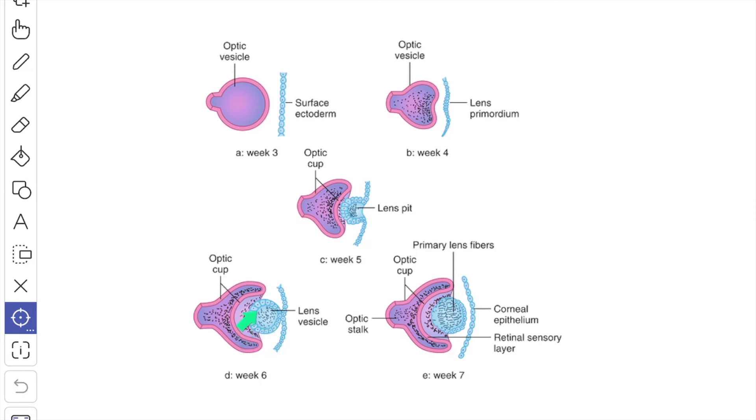The cells of the posterior wall of the vesicle elongate from behind forward and are converted into primary lens fibers. These fibers eventually obliterate the cavity and meet the anterior wall. The obliteration is completed by the seventh week of intrauterine life.